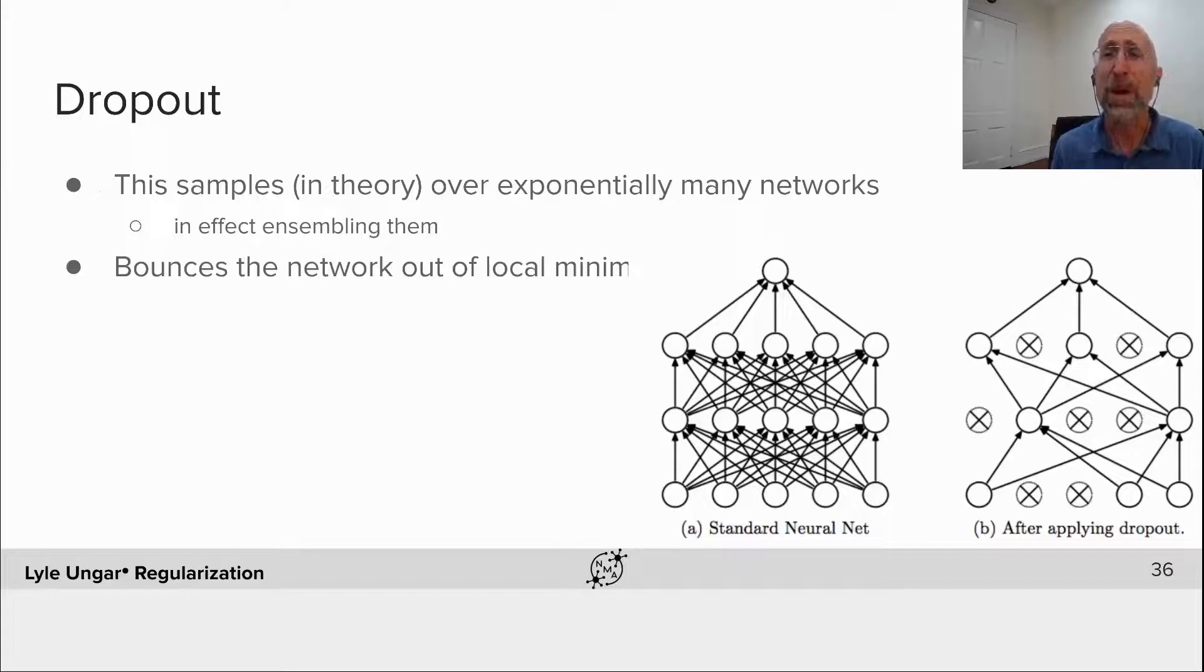Occasionally people do dropout on some of the layers and not on other ones. There's lots of choices. But in general, particularly for convolutional neural nets, dropout leads to better solutions.